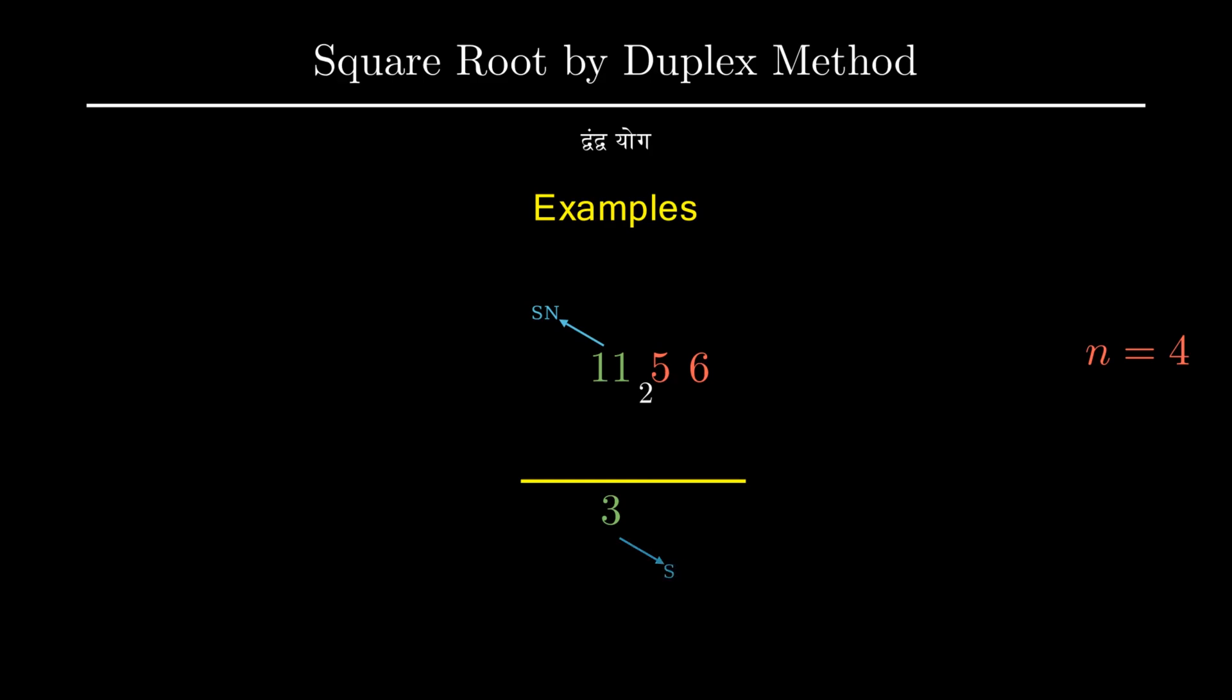This will be the first digit of our final answer. Using this we will find the divisor by multiplying it by 2 and keeping it on the left hand side.